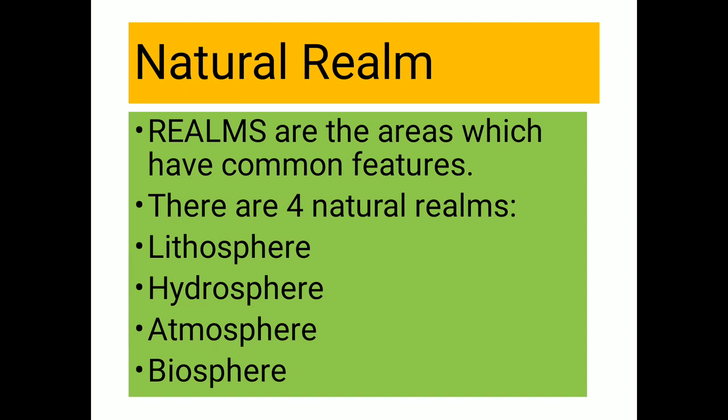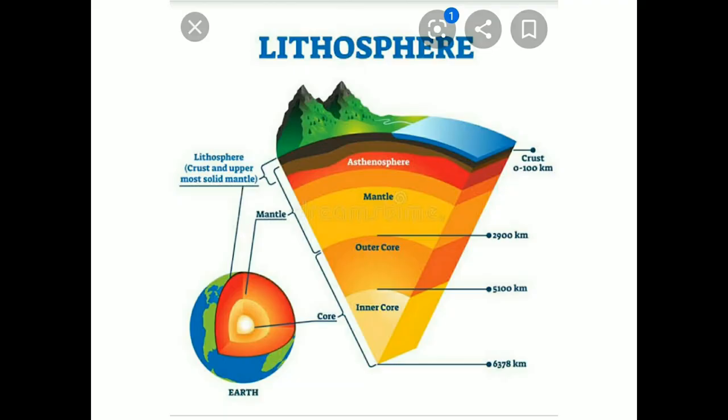Let us now discuss regarding the lithosphere. You can see the picture here children. The top layer of the earth is the lithosphere. In the previous lesson we discussed the internal structure of the earth. The first layer is crust, second is mantle, and the third is core. Upon the crust all the mountains, oceans, continents, plateaus, and plains — that part is called lithosphere.